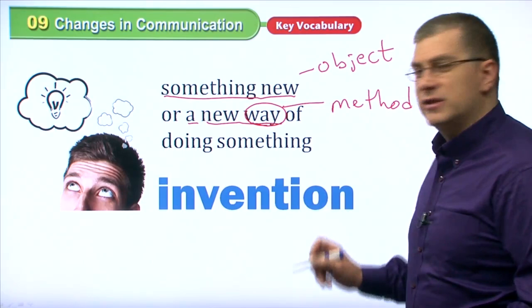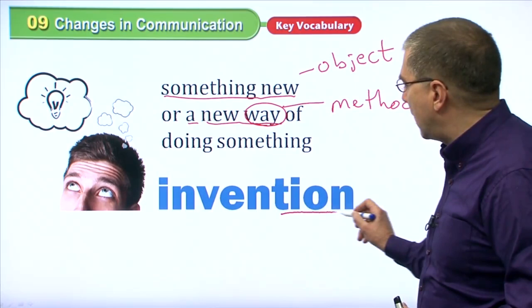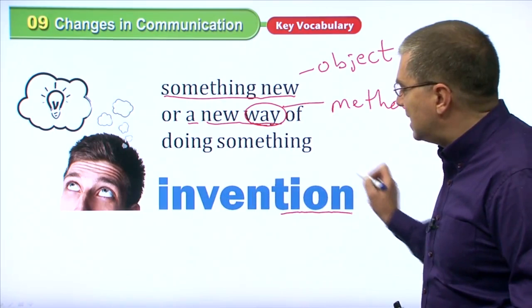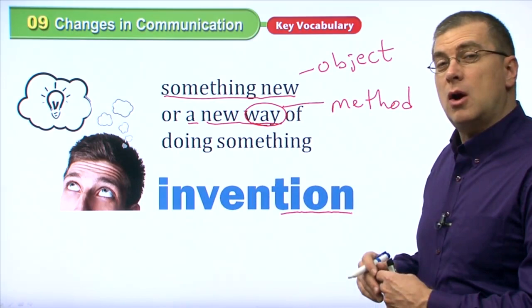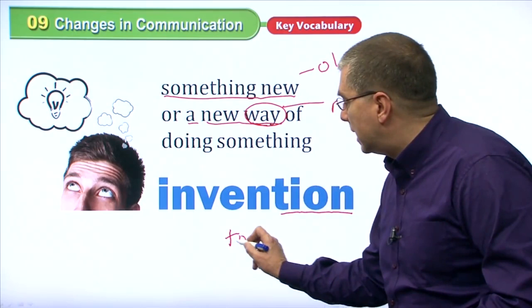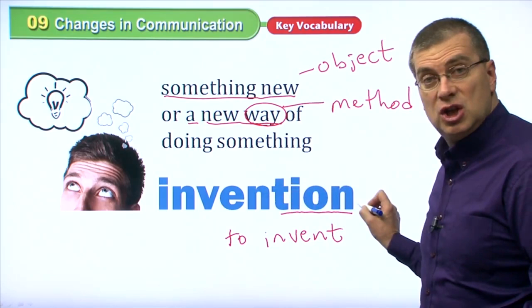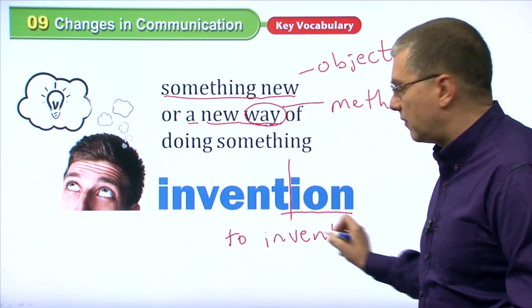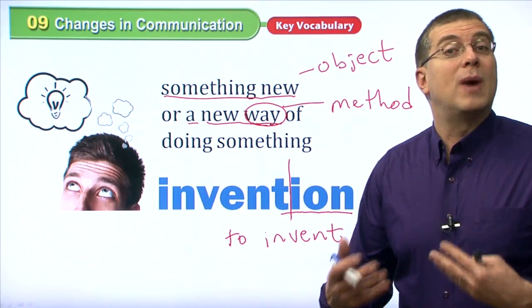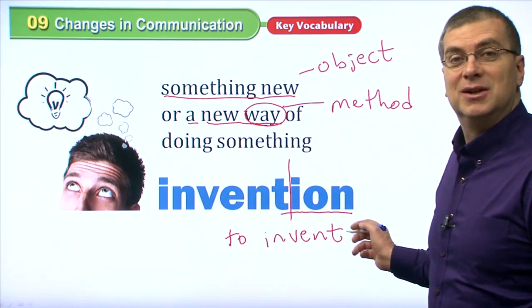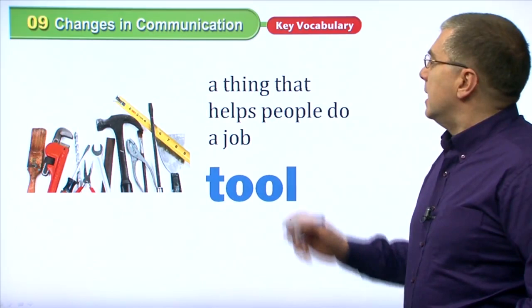By the way, we have many words in this unit that end with T-I-O-N. Whenever you see T-I-O-N, you know that word is a noun. Many of these words are also used as verbs — we drop I-O-N, so 'invention' becomes 'to invent.' Invention is a noun; to invent is a verb. If you make something new, or think of a new way of doing something, you are inventing. You have an invention. We'll see many words like this in today's lesson.